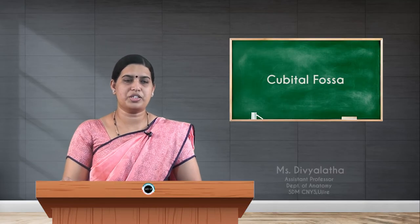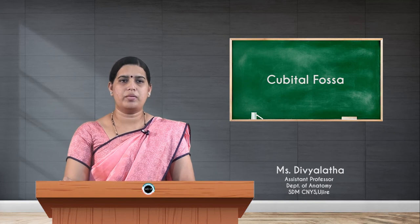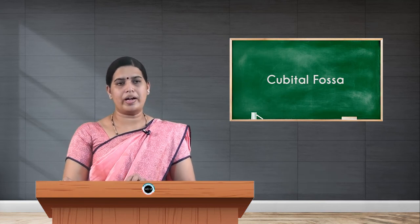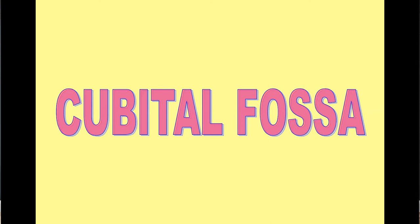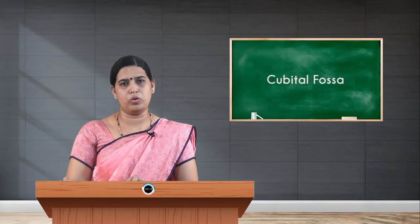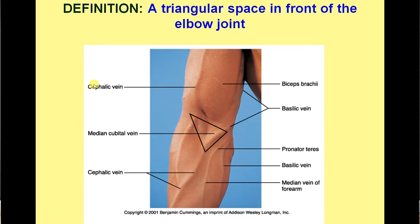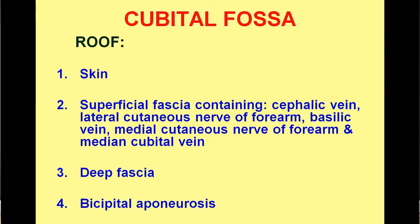Welcome to the session. Today I am going to explain about the cubital fossa. The cubital fossa is situated in the front of the elbow, homologous to the popliteal fossa in the knee. It is an inverted triangular fossa, with the apex directed lower at the meeting point of two important muscles, and the base directed upwards.